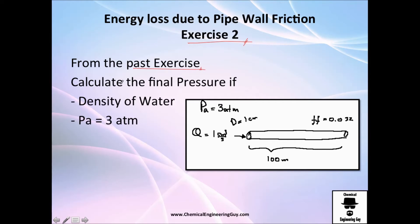Exercise. Calculate the final pressure, because hopefully you know that pressure drop is a consequence from friction loss. They tell you to assume the density of water, which is 1000 kilograms per cubic meter. And the initial pressure, or the pressure in this point right here is three atmospheres. So let's calculate that.